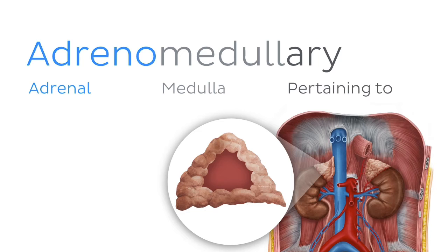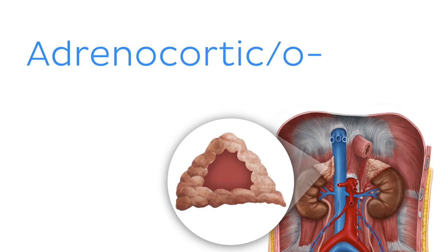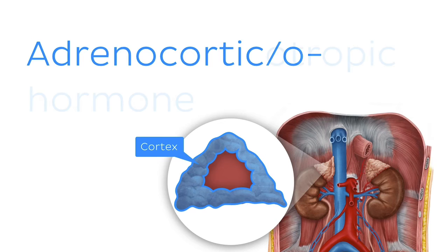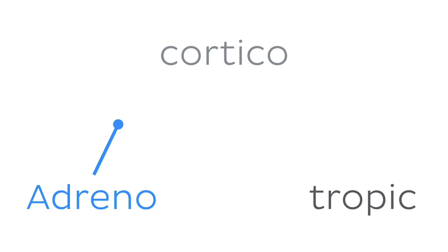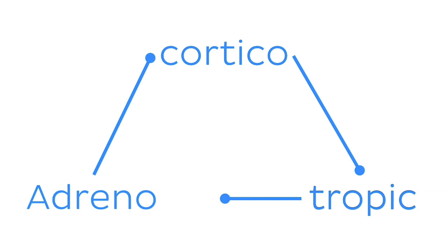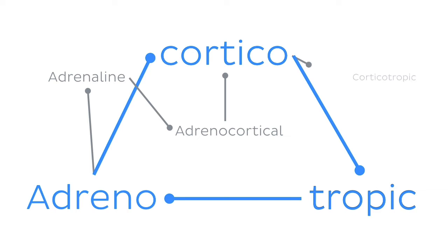Epinephrine and norepinephrine are produced in the inner portion of the adrenals called the medulla. So the substances pertaining to the medulla could be referred to as adrenomedullary. Similarly, we also have the root adrenocortic or adrenocortico associated with the outer portion of the adrenals, known as the cortex. For example, adrenocorticotropic hormone is secreted by the pituitary gland and acts to stimulate the adrenal cortex in secreting cortisol. You'll find that in terminology it is all connected and the same word parts tend to pop up, so once you learn a word part once, you can use it again and again.